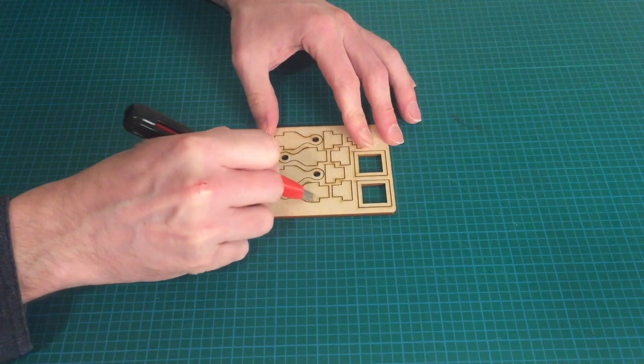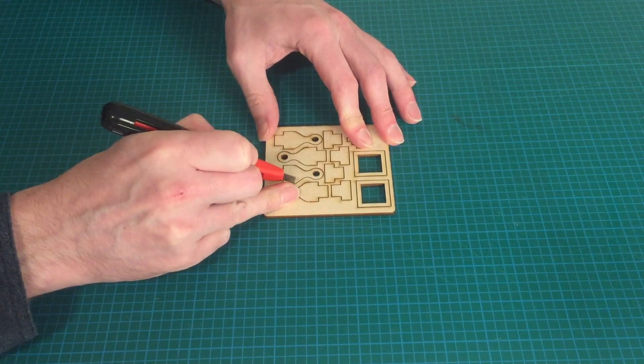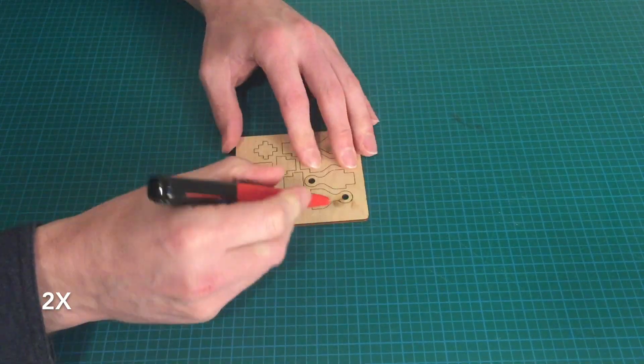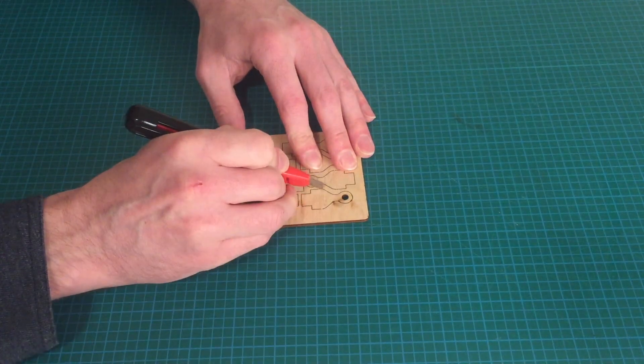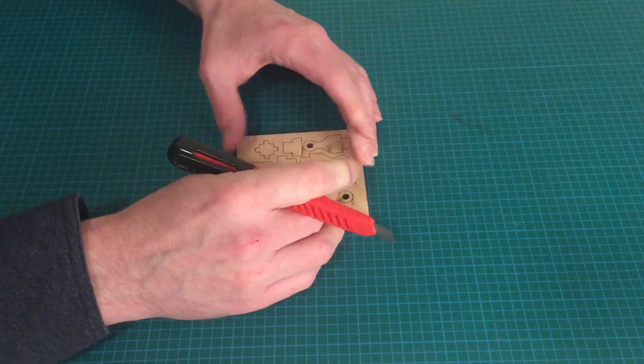The CAM function in Fusion allows me to add tabs to the toolpath, so that small parts do not fall out of the material when cut. You'll see here that I've made the tabs a little bit too big on this design, and so the parts had to be cut out rather than just pushing out, but for a first attempt I'm happy.